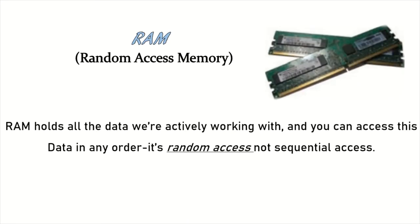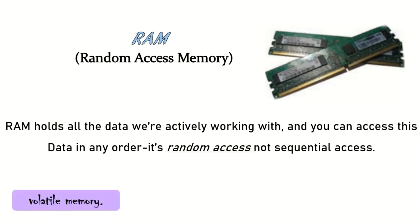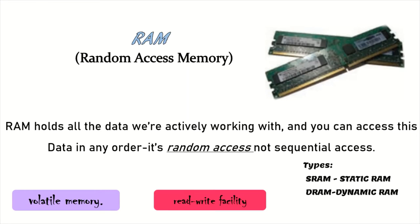Random Access Memory (RAM). RAM holds all the data we are actively working with, and you can access this data in any order — it's random access, not sequential access. RAM has read-write facility and comes in types: Static RAM and Dynamic RAM.